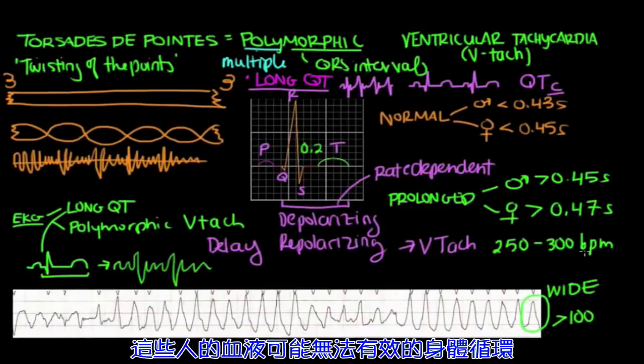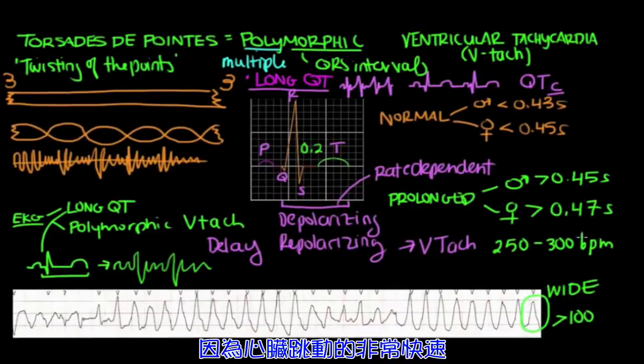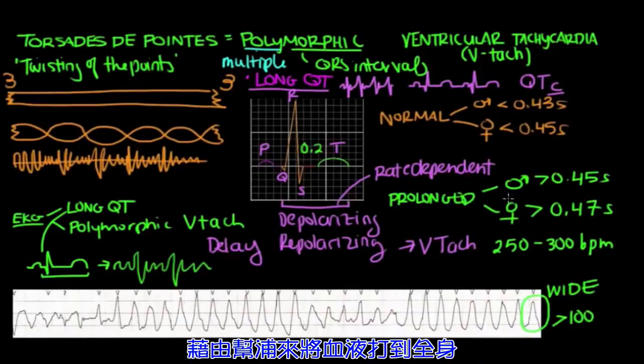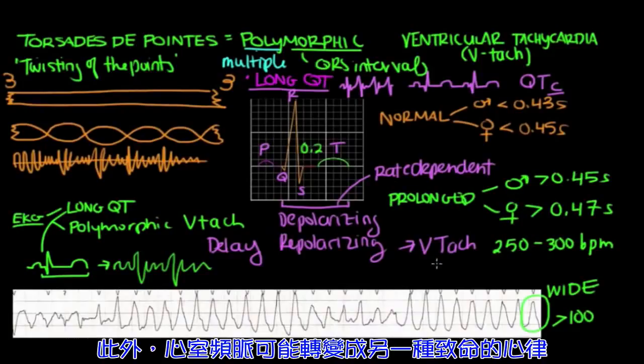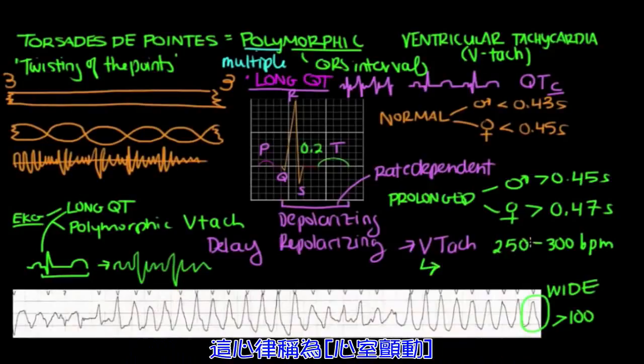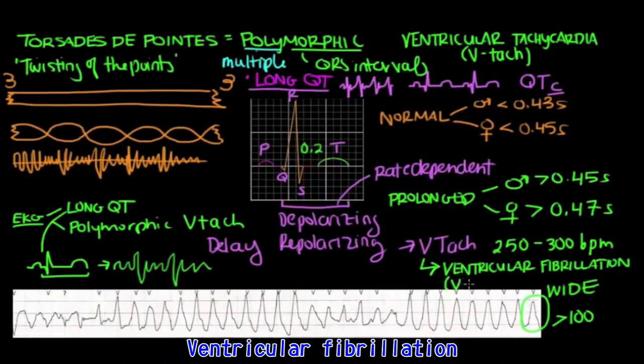People with Torsades who are in a polymorphic V-tach can have heart rates at up to 250, even 300 beats per minute, which is dangerously high. These people might not be able to circulate blood effectively to their body because their heart's beating so fast, and there's not enough time for the heart to fill with blood and pump that to the rest of the body. Also, V-tach can turn into another deadly heart rhythm called ventricular fibrillation, also called V-fib.